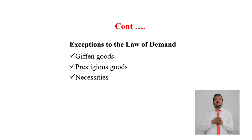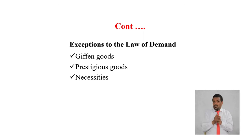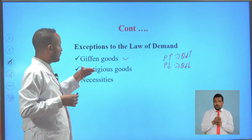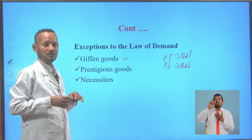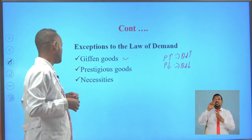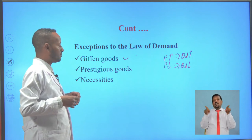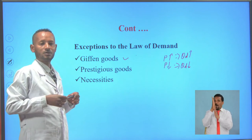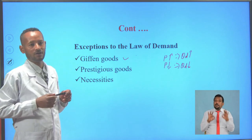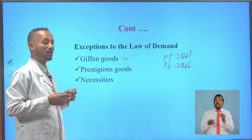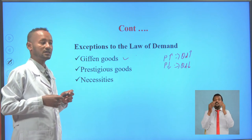Prestigious goods are also against the law of demand — as the price of prestigious goods increases, demand for them also increases, and as price declines, demand also declines. Necessities are another exception: necessities are those commodities essential for survival, and as the price of necessities increases, quantity demanded will not decline.